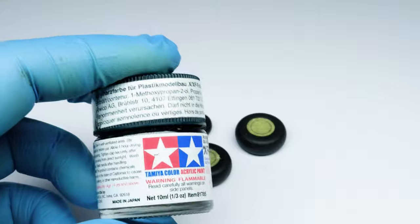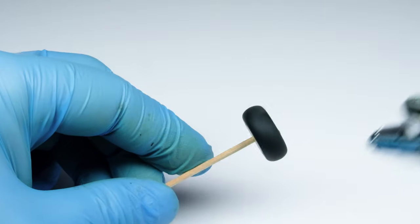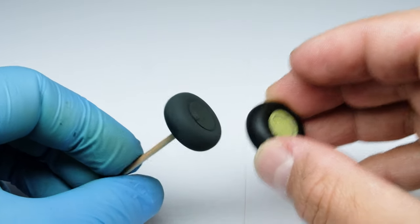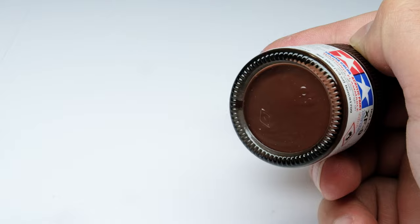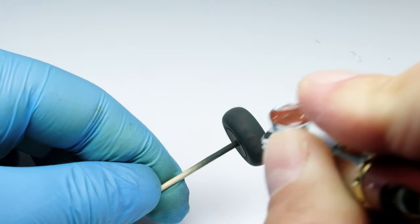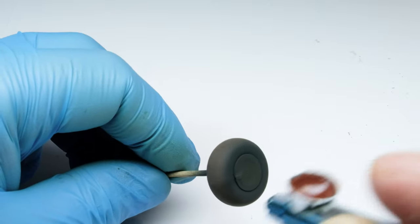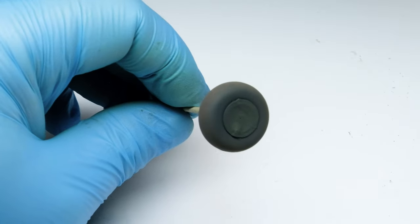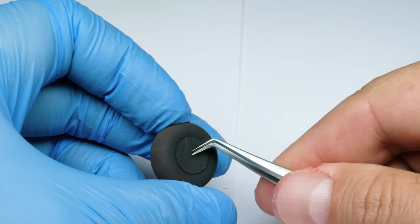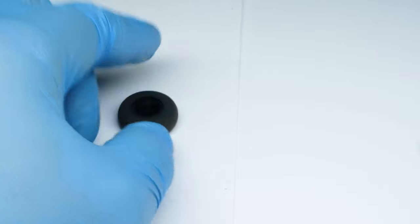After the wheels are primed with Mr. Surfacer 1500 in black, I mask the rims with the Eduard mask I bought. Then I spray a coat of Tamiya rubber black thinned with tap water or alcohol. I aim for a matte finish. Then with a very diluted red-brown color like the Tamiya hull red, I add some weathering to the tires.